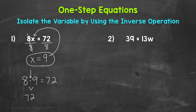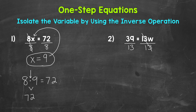Let's move on to number 2, where we have 39 equals 13w. We need to isolate that variable of w. w is being multiplied by 13. So we need to undo that multiplication using the inverse operation. The inverse of multiplication is division. So let's divide this side by 13. Now whatever we do to one side, we must do to the other. So let's divide this side by 13 as well. Now on the right side, we are multiplying by 13 and dividing by 13. So these 13s cancel out. We have 13 divided by 13, which equals 1. So we have 1w, which is just w. Our variable is isolated. It's by itself.